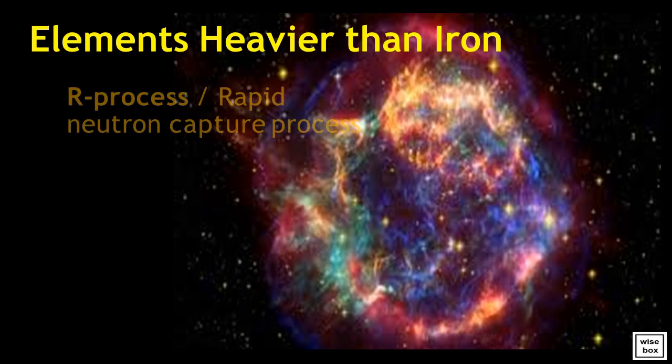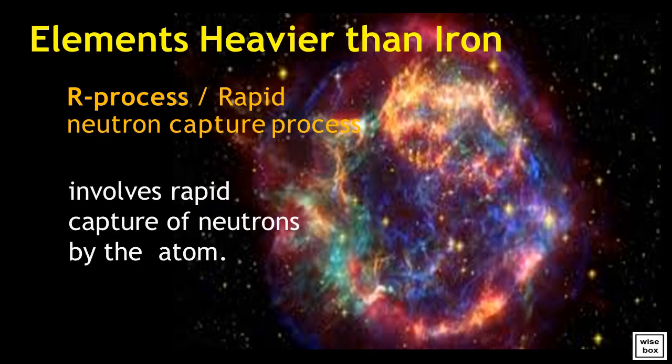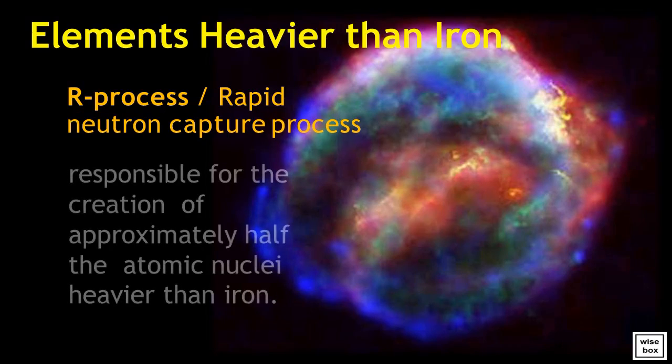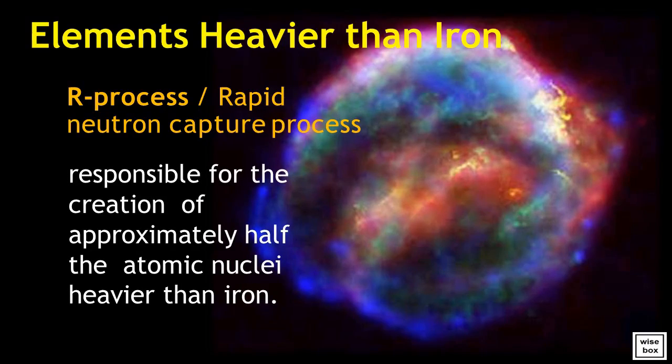The rapid neutron capture process, or R-process, involves rapid capture of neutrons by the atom. The R-process is responsible for the creation of approximately half the atomic nuclei heavier than iron.